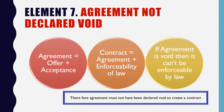Element 7: Agreement Not Declared Void. An agreement equals offer plus acceptance. A contract comes from an agreement enforceable by law. If the agreement is void, then the contract will also be void, and a contract will not be created. Therefore, the agreement must not be declared void in order to create a contract.